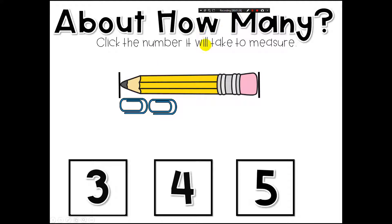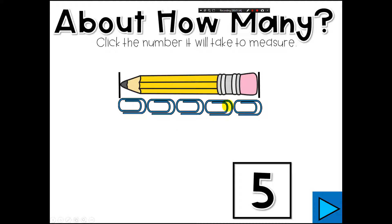'About How Many — click the number it will take to measure.' Students will take a look at what's being measured and decide how many of the non-standard measuring object they will need. If they click the incorrect number they will get a reinforcer to let them know. When they click the correct answer they will see however many non-standard units were used to measure. Then they click to the next slide.